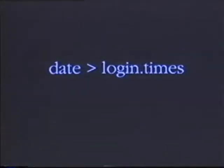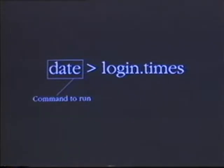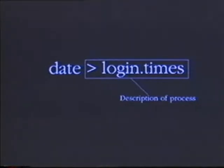Let's take a closer look at exactly what this command line says. It's actually two pieces. The first is the name of the program to execute and the second is a description of how the shell is to create this process. It identifies where the standard output of that process is to be connected.